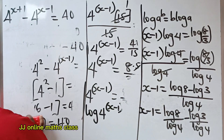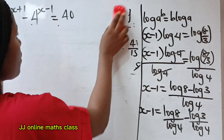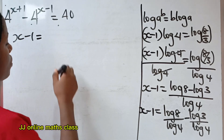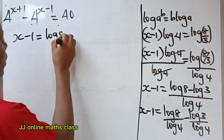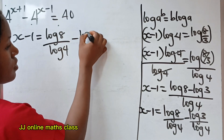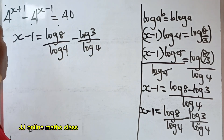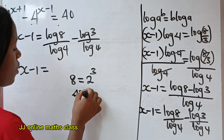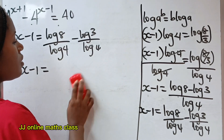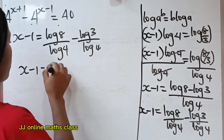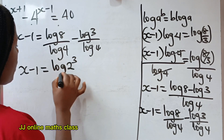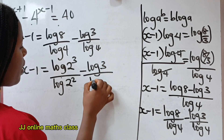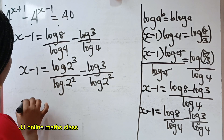So x minus 1 is equal to log 8 divided by log 4 minus log 3 divided by log 4. Now, 8 is equal to 2 to the power of 3 and 4 is equal to 2 to the power of 2. So let's express them in this form. We will have log(2^3) divided by log(2^2).